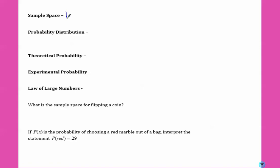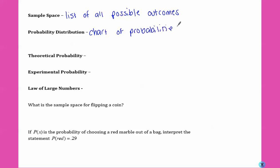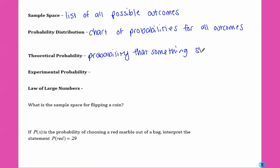Sample space is a list of all possible outcomes. A probability distribution is a chart of probabilities for all outcomes. Theoretical probability is the probability that something should happen. Experimental probability is the probability when you actually try something.